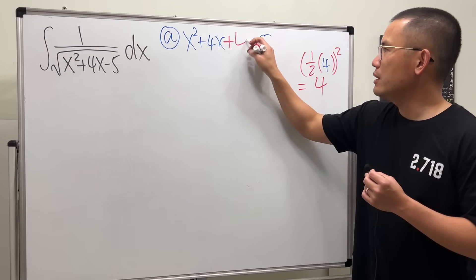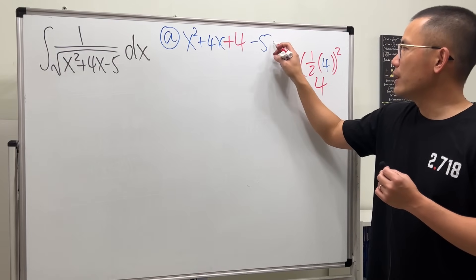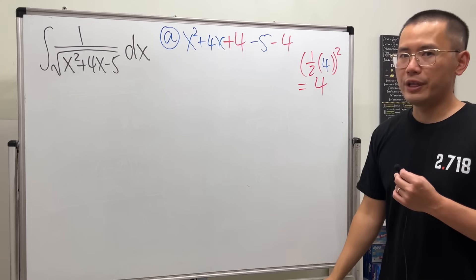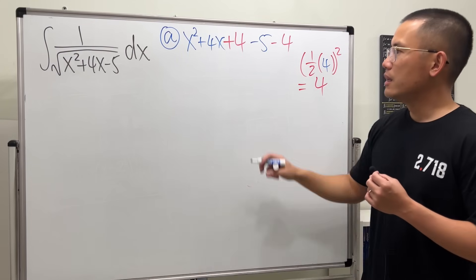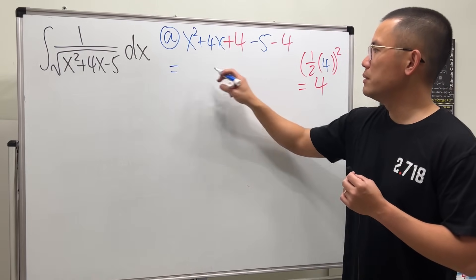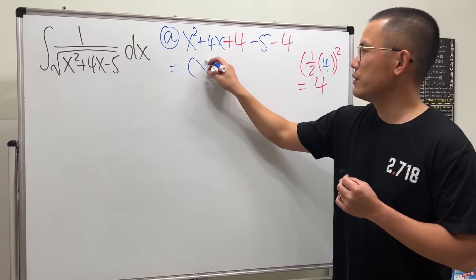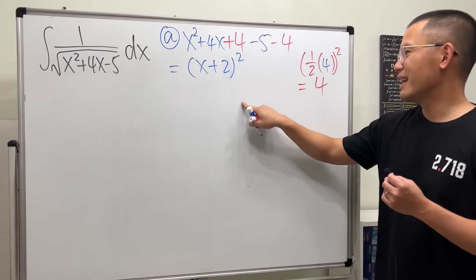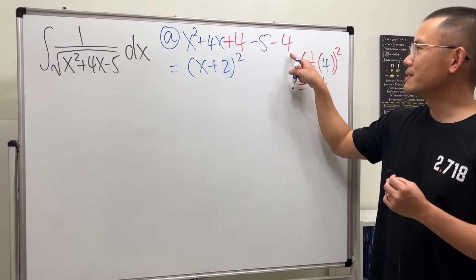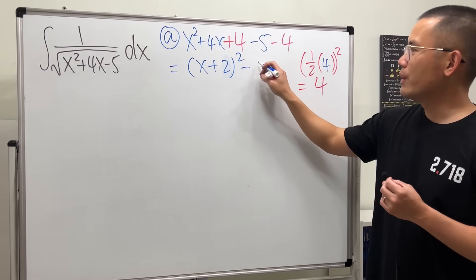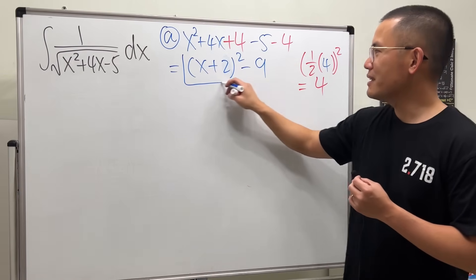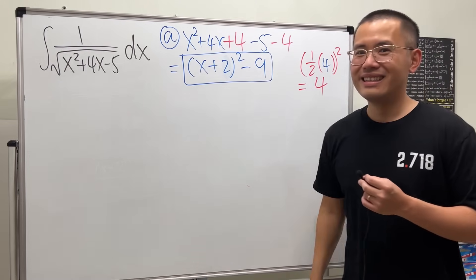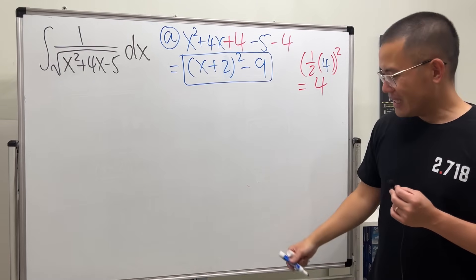That is the number we add, and then go ahead and minus the same number at the very end. This way the first three terms give us a perfect square: (x + 2)², and then minus 5 minus 4 is of course minus 9. And then we are done for the first part — it's quite nice that they give us this.